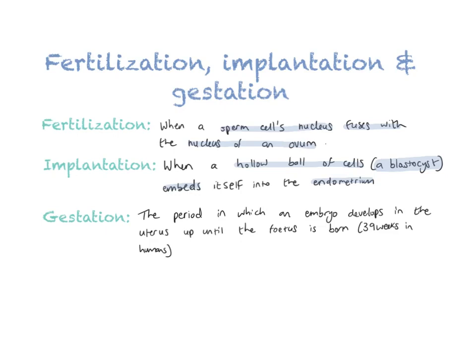The last definition for the day is gestation. A lot of people use the word 'pregnancy' here, which is the wrong one-word answer. Gestation is the time period in which an embryo develops in the uterus up until the fetus is born — we don't say an embryo is born, we say a fetus is born. In humans our gestation is 39 weeks. The only term we accept in life sciences is gestation.